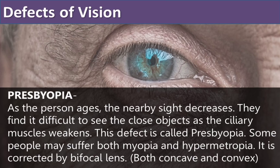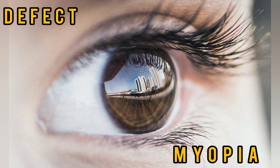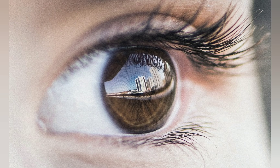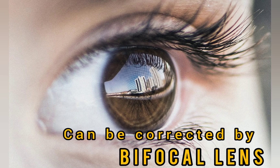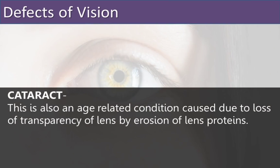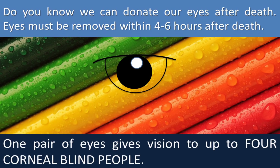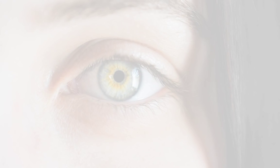In some cases, people may suffer from both myopia and hypermetropia. This is corrected by a bifocal lens, which contains both concave and convex portions. Another age-related defect is cataract, which is caused due to the loss of transparency of the lens by erosion of lens proteins.